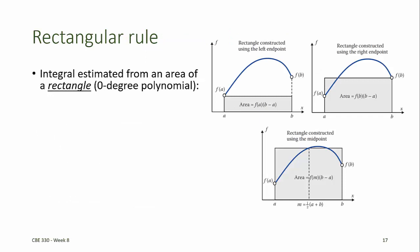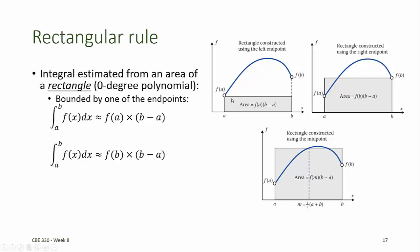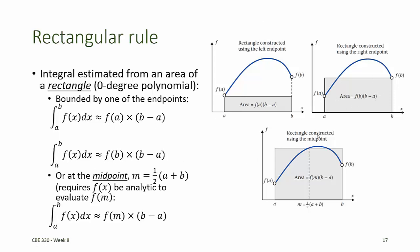The rectangle rule is the first and simplest of the Newton-Cotes formulas. It estimates the integral from the area of a rectangle, which is essentially a zero-degree polynomial. The height of the rectangle is determined by the value of f at some point in the domain: either the left-hand side using f at a, the right-hand side using f at b, or the midpoint using the point halfway between a and b. The midpoint requires that we either know the value of f at the midpoint, or that f of x be analytic so we can evaluate it at the halfway point.